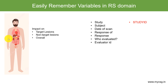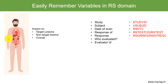For study identification we use STUDYID, for subject we use USUBJID, and for the date of scan we use RSDTC. The type of response — whether target lesion, non-target, or overall response — is identified using RSTESTCD and RSTEST. The actual response value, such as complete response, partial response, stable disease, or progressive disease, is stored in RSORRES. The evaluator is stored in RSEVAL, and if there are multiple evaluators, their identification numbers (e.g., Radiologist 1, Radiologist 2) are stored in RSEVALID.